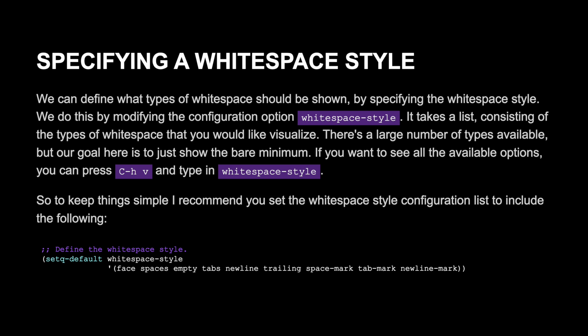To keep things simple, I recommend you set the whitespace-style configuration list to include the following: face, spaces, empty, tabs, newline, trailing, space-mark, tab-mark, and newline-mark. With just this configuration change, the behavior of Emacs's whitespace mode will become much more familiar in regards to how other text editors visualize whitespace.